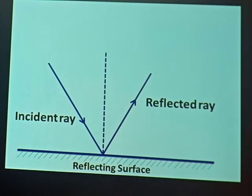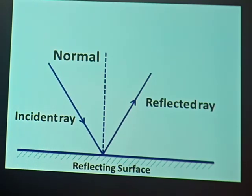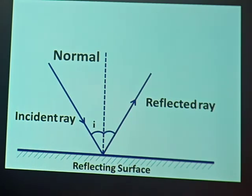Remember, there is an imaginary line that we named the normal. We said that we draw it with a dotted line because it is imaginary. We talked about angles — among them the angle of incidence, which is the angle between the incident ray and the normal, and the angle of reflection, which is the angle between the reflected ray and the normal.